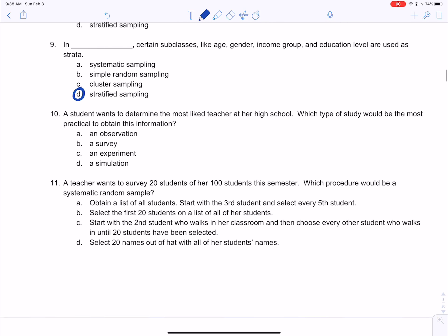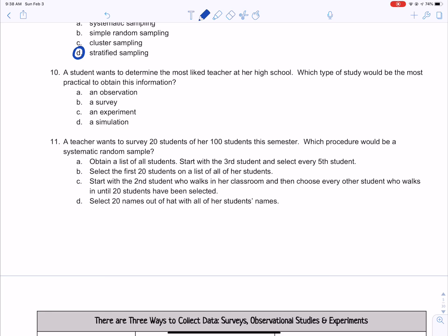Number 10 says a student wants to determine the most liked teacher at her school. Which type of study would be most practical to obtain this information? So that would be a survey. We'll talk about the other things listed there in the next video, I believe.